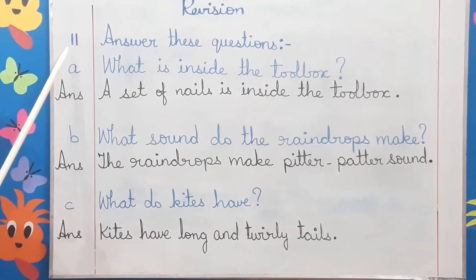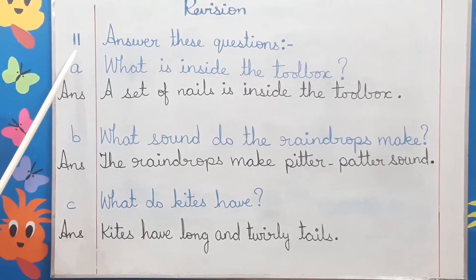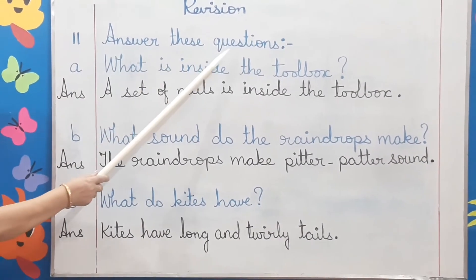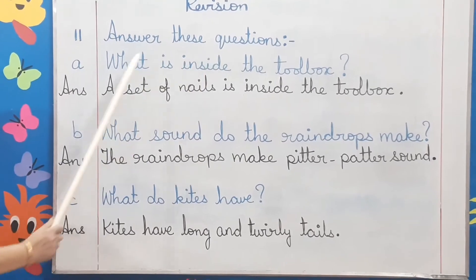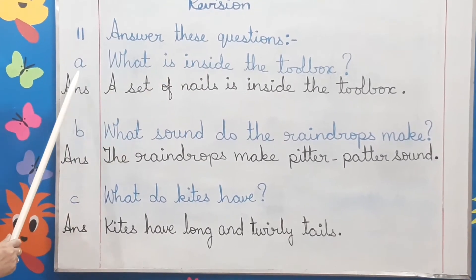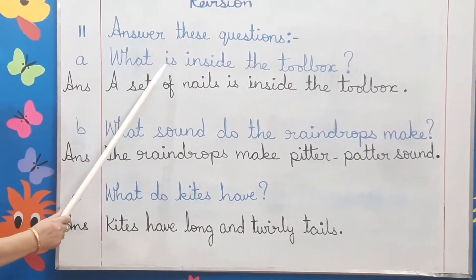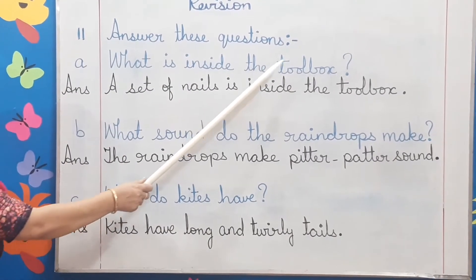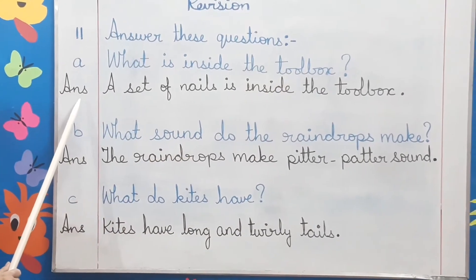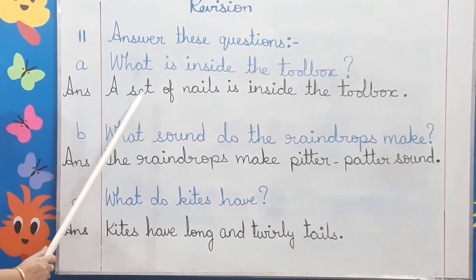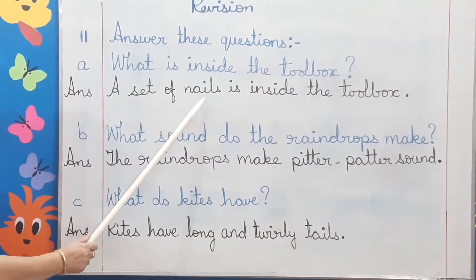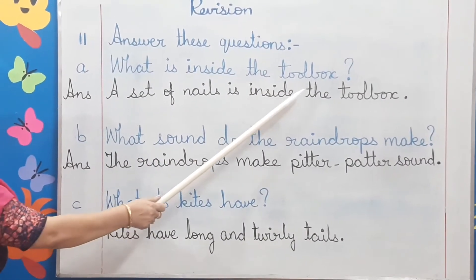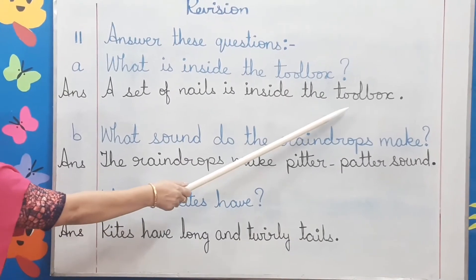Topic number two: answer these questions. A. What is inside the tool box? Answer: A set of nails is inside the tool box.